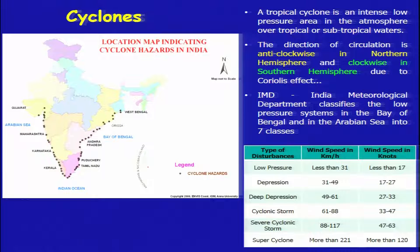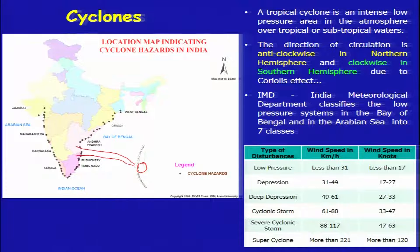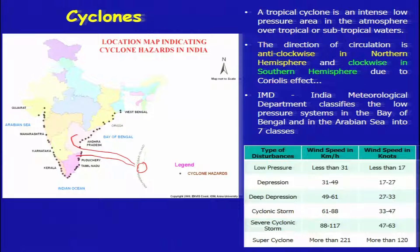Most cyclones develop in the eastern part and then move towards the west. Looking at previous data, you will find different tracks marked by the landfall. Cyclones also develop in areas moving towards Gujarat, Maharashtra, Karnataka and Kerala. Cyclone Gaza again originated in the southeastern portion of the Indian subcontinent and moved towards the east coast of the Indian mainland.